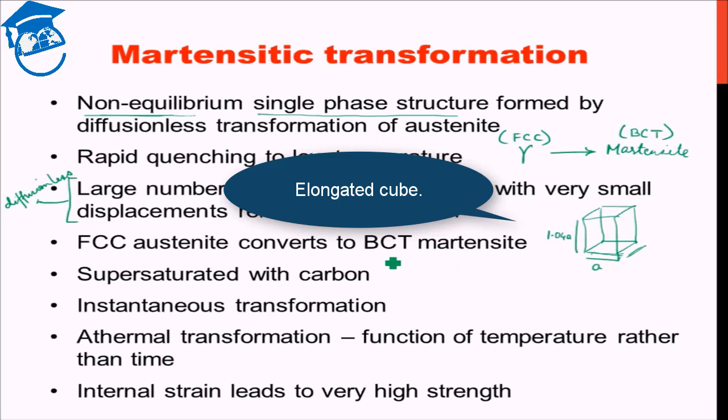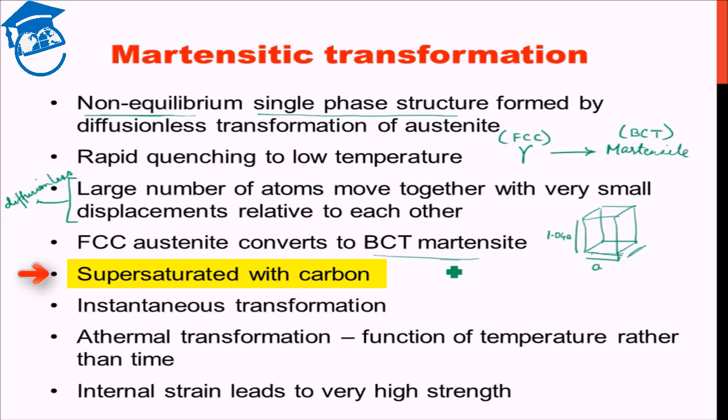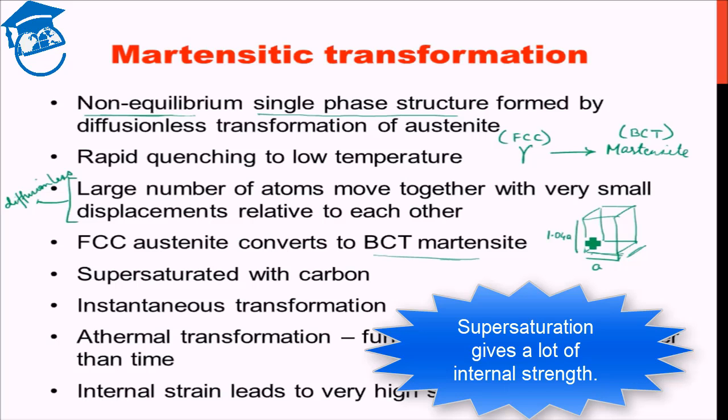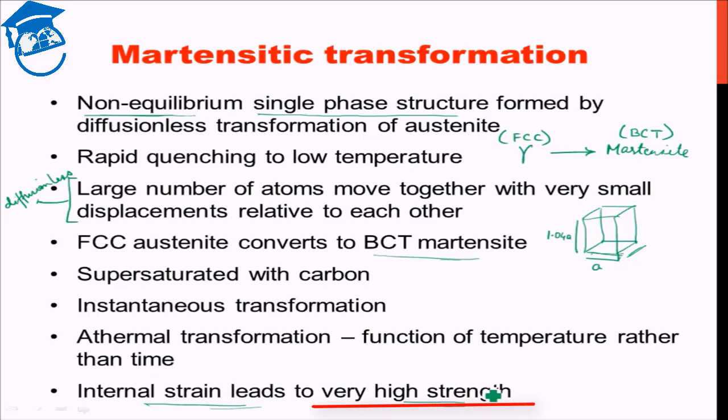This BCT martensite is actually a supersaturated solution. It is supersaturated with carbon. That is due to the rapid quenching, carbon did not get time to escape out. It could not diffuse out of the material and attain the equilibrium state. Rather, the carbon somehow accommodated within the material, thereby forming the BCT structure, which is supersaturated with carbon. This supersaturated carbon, which are present in the void sites leads to a lot of internal strain. The supersaturation leads to a lot of internal strain. And it is this internal strain which gives martensite a very, very high strength and very, very high hardness.